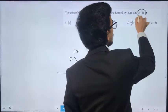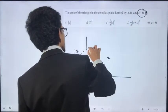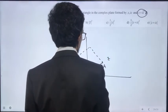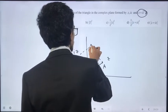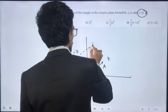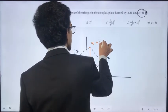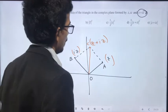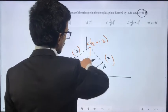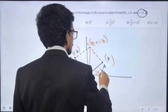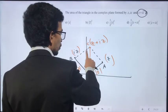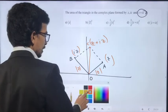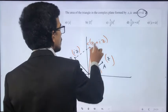z + iz is obtained by adding these vectors. This gives point C. This forms a triangle with vertices at z, iz, and z + iz, which is actually part of a square.